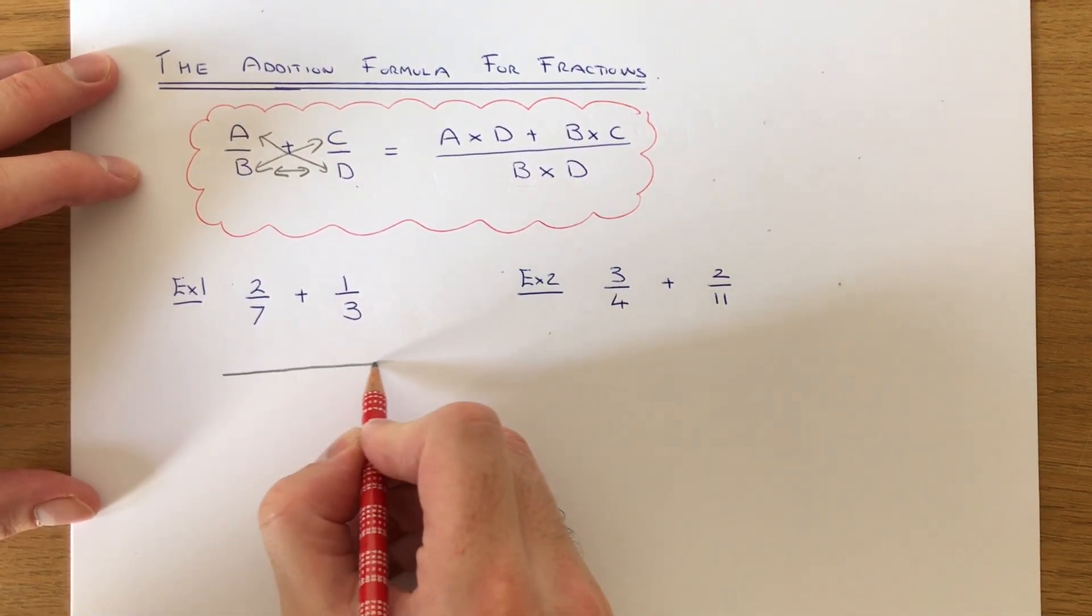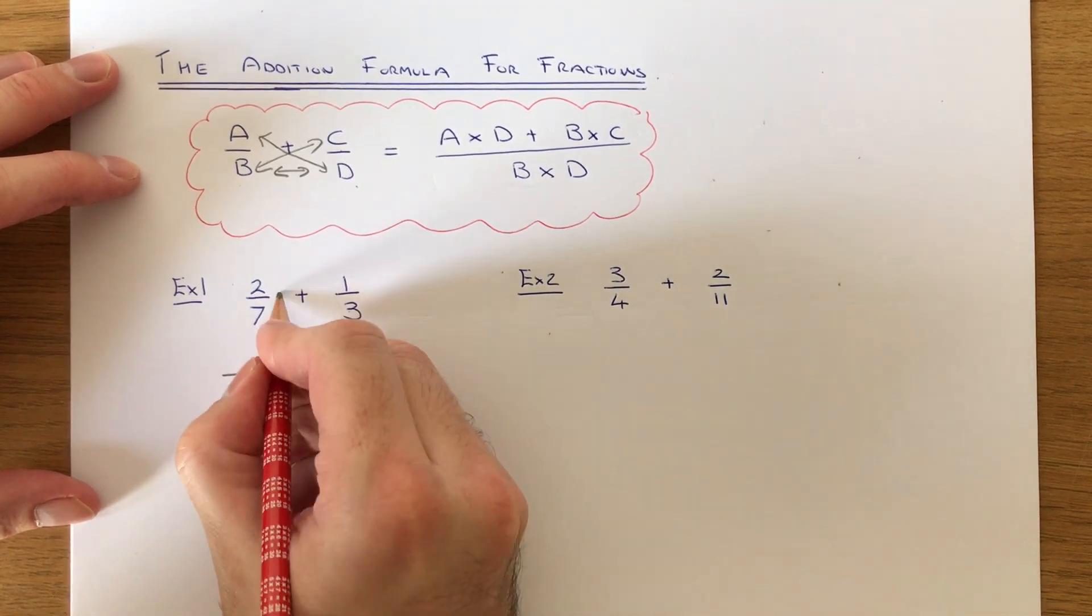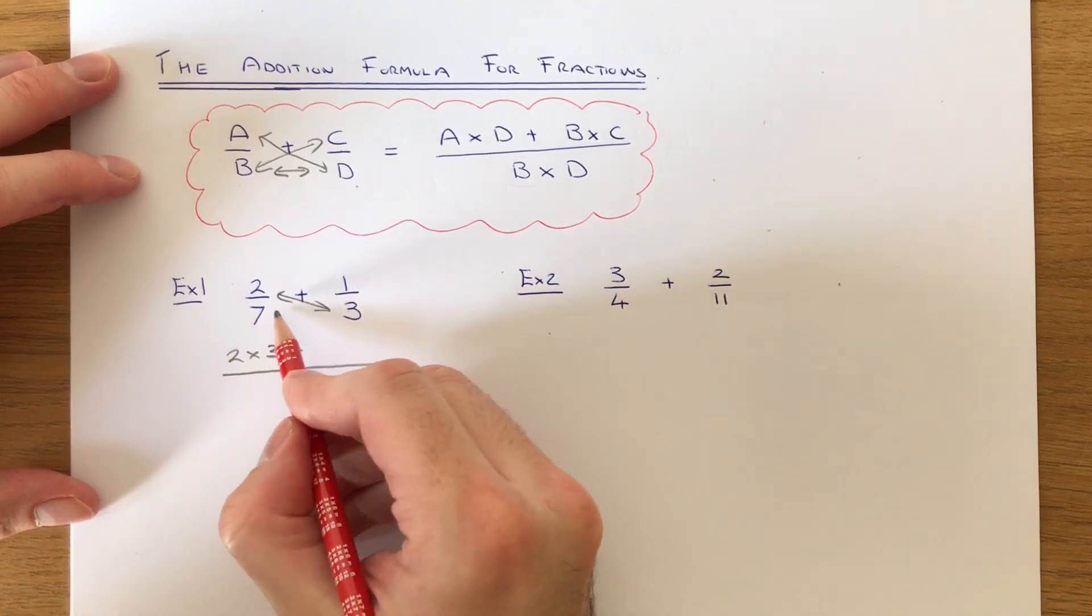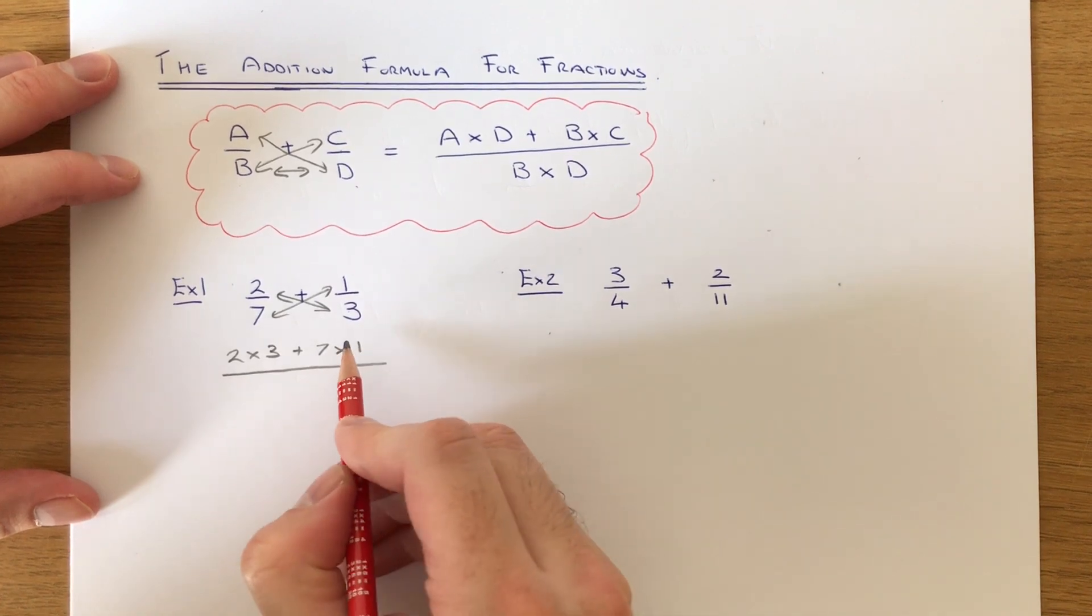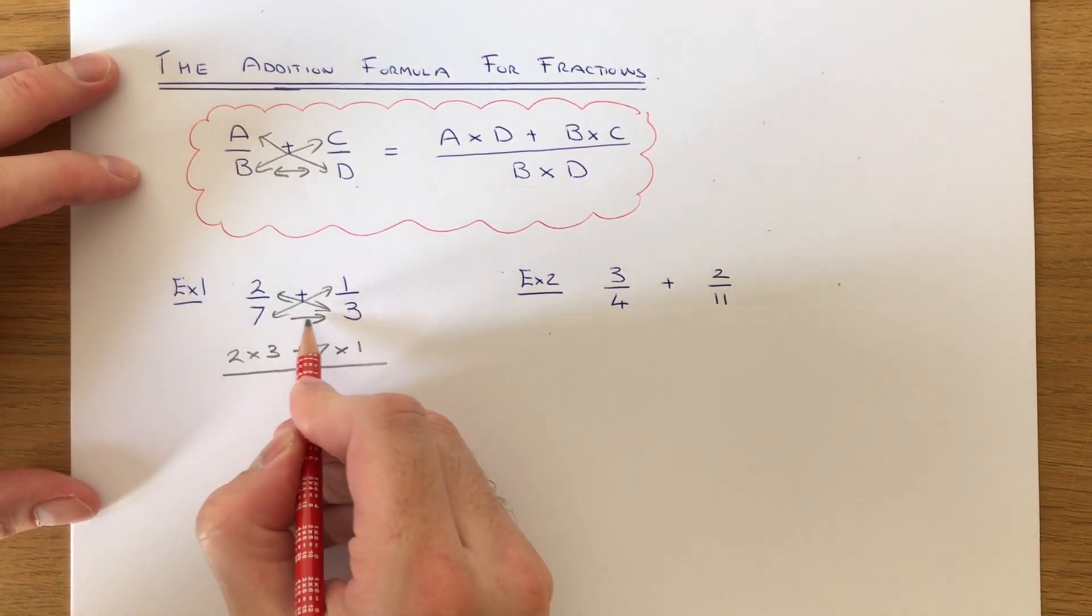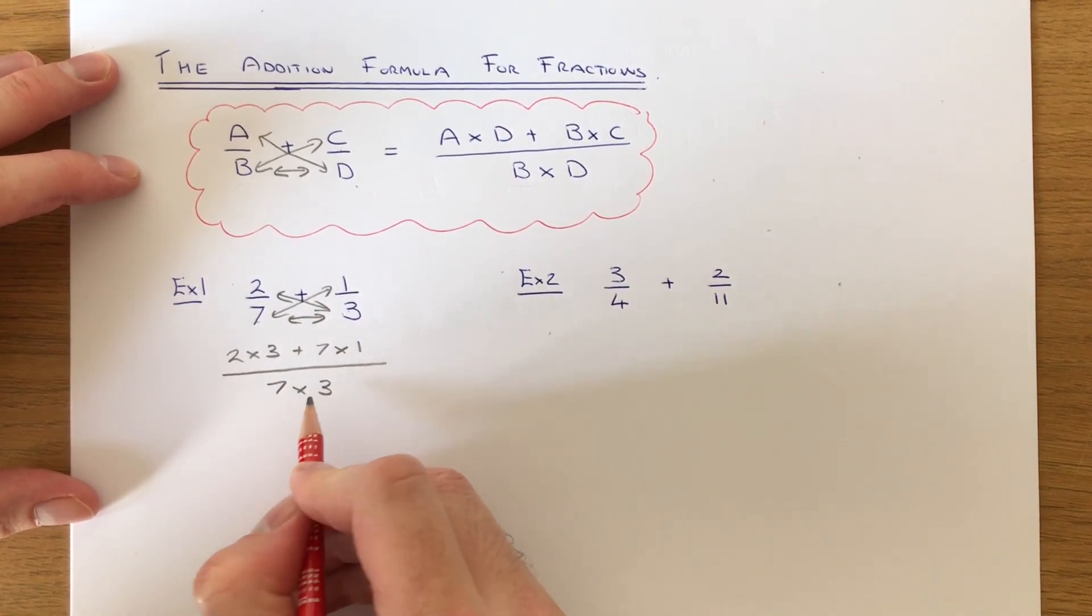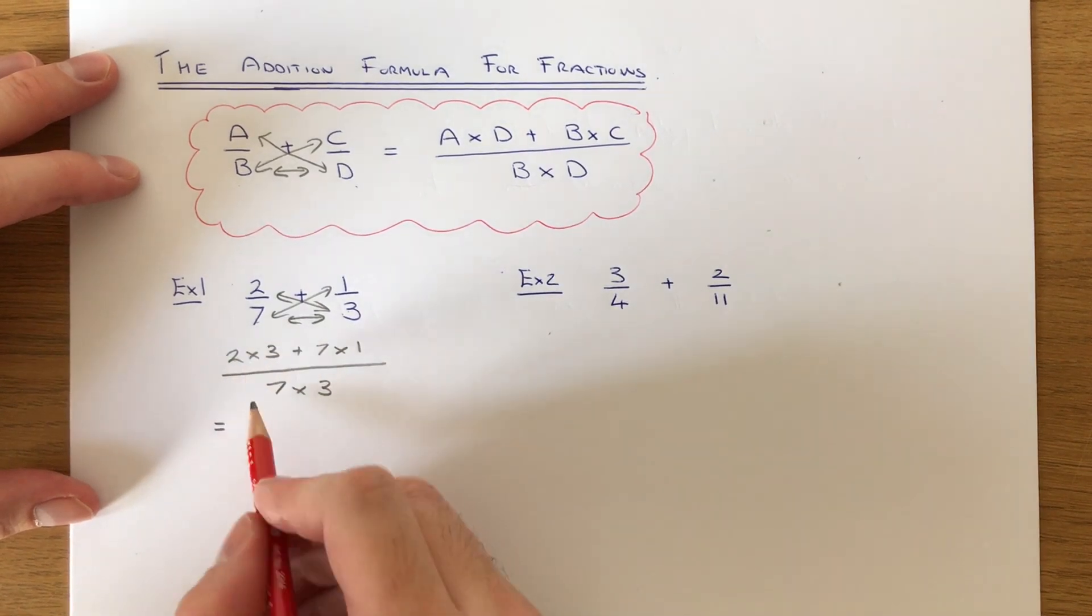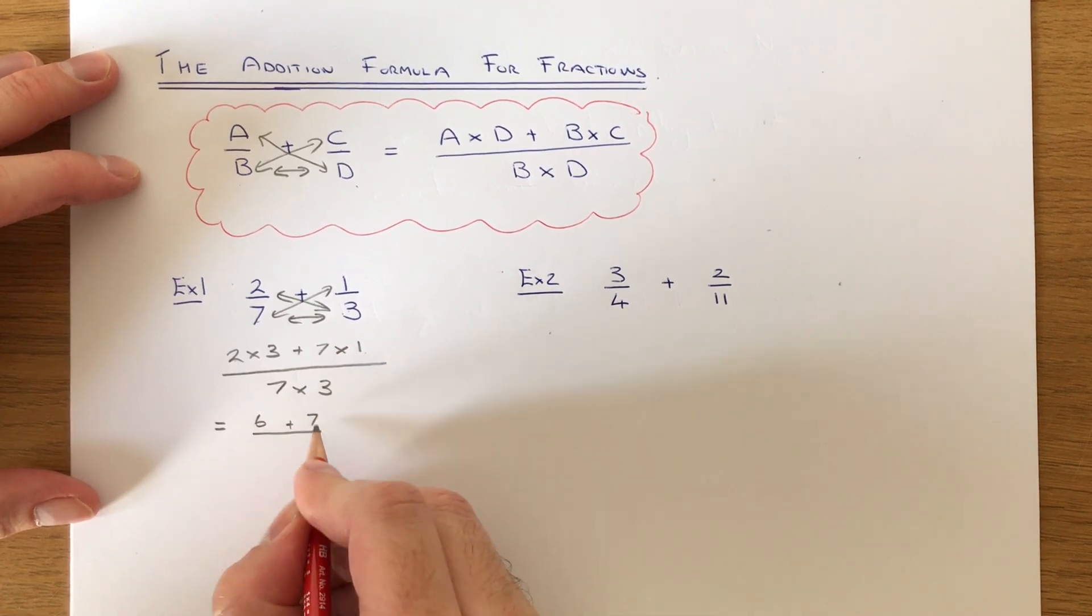On the top of the fraction, we're going to multiply two by three and then add on seven times the one. On the bottom of the fraction, we're going to multiply the seven by the three. If we work out the numerator, two times three is six plus seven times one is seven. On the denominator, seven times three is twenty-one.